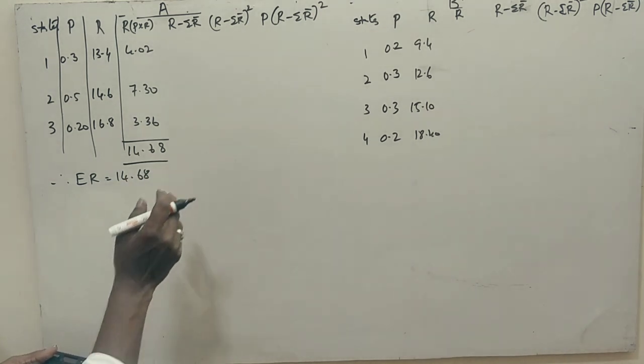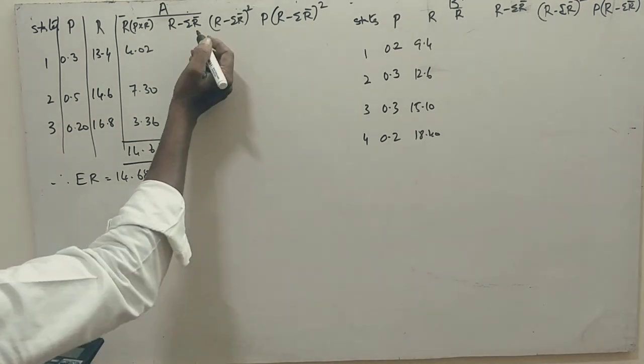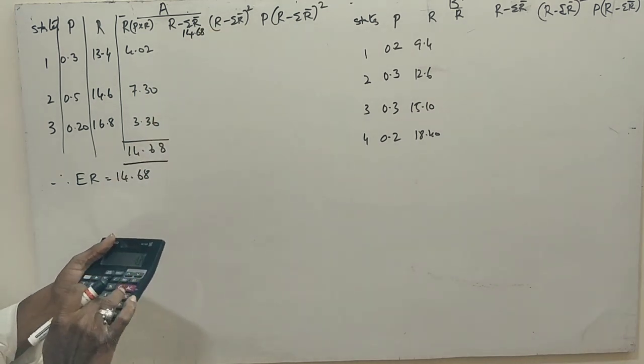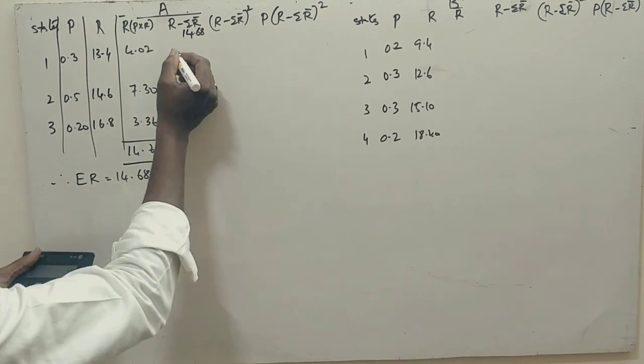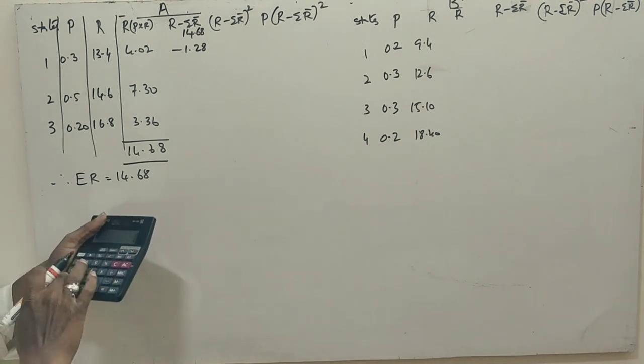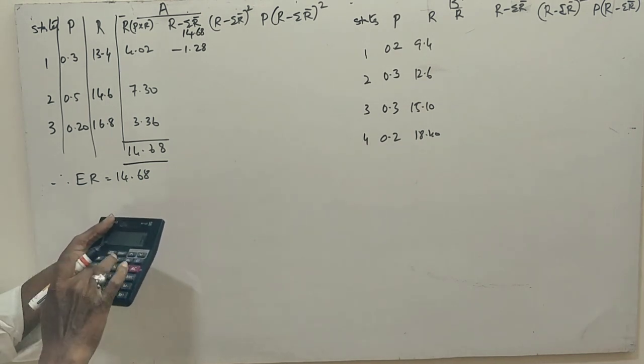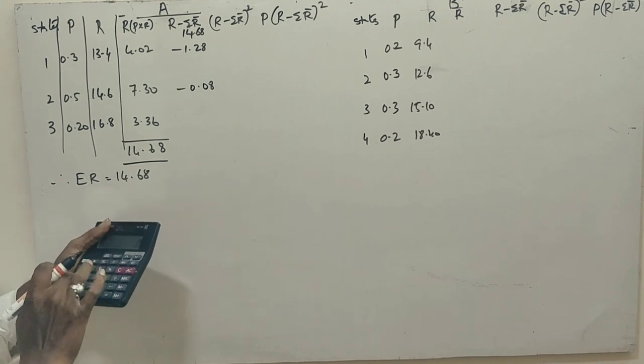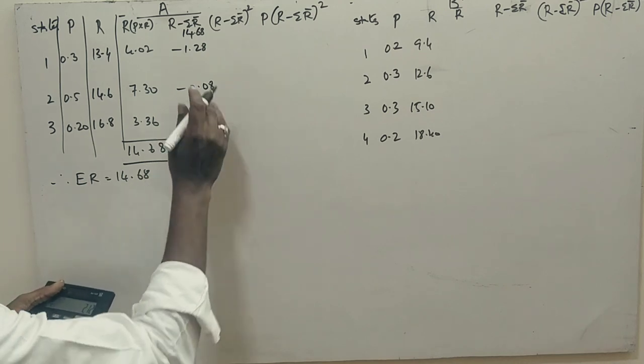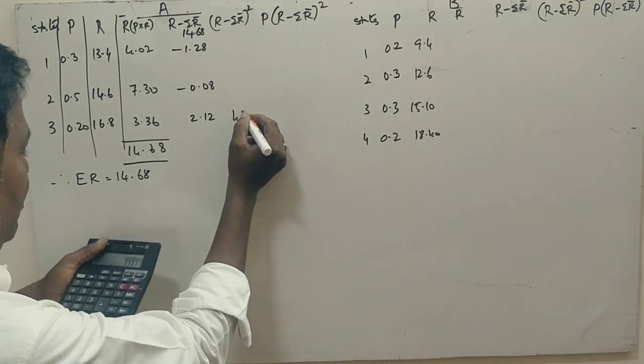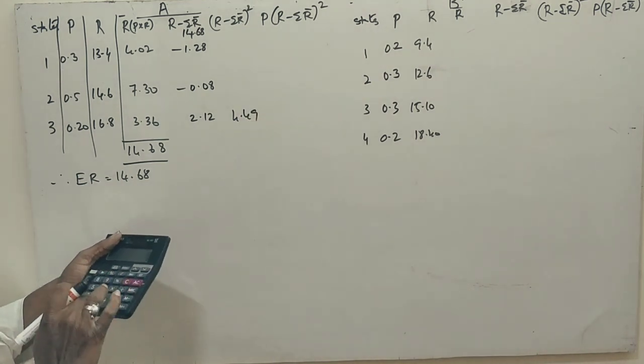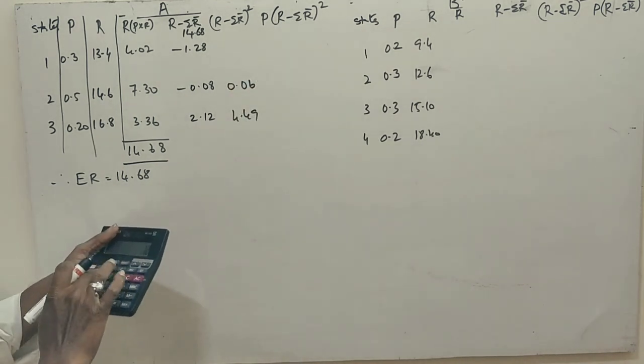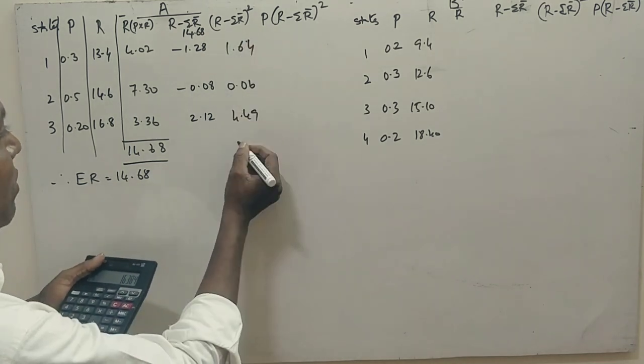Now, let's see the standard deviation. First, we have to find the variance. So, r minus r-bar, where r-bar is 14.68. Now, 13.4 minus 14.68 equals minus 1.28. Next is 14.6 minus 14.68 equals minus 0.08. 16.8 minus 14.68 equals 2.12.